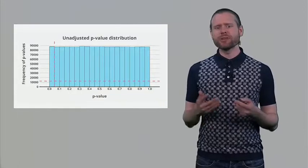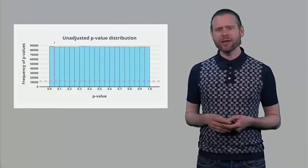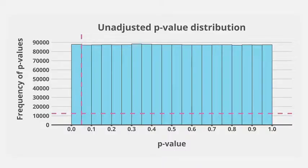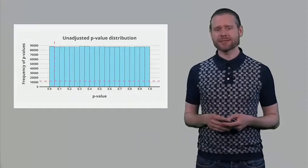In the 2x2x2 ANOVA where we perform seven tests, the graph shows the Type 1 error rate — all p-values smaller than 0.05. This should be at the level of the horizontal line representing the expected Type 1 error rate, but the actual observed Type 1 error rate is much higher because we are doing many different tests.